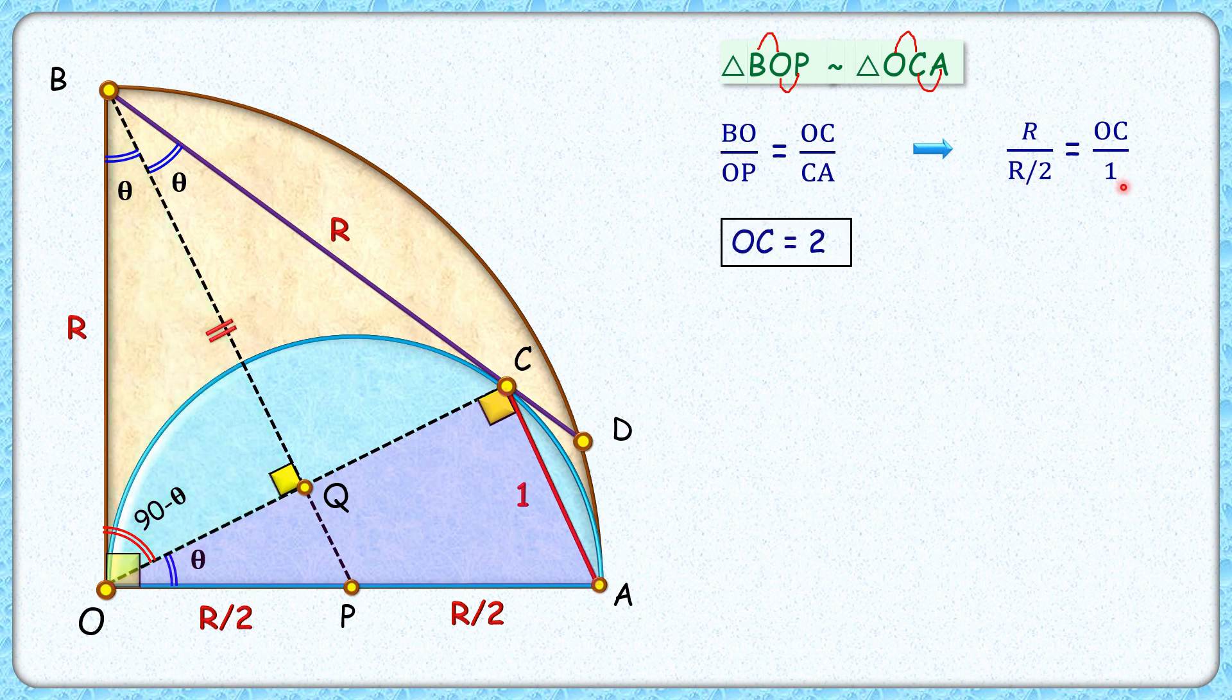So now we have got this OC length as 2 centimeters. Now this pink triangle is a right angle triangle. Applying Pythagorean theorem, we'll get OA square is OC square plus CA square.